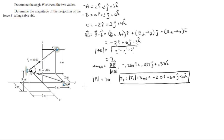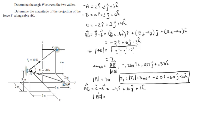Now we're going to repeat all the steps but for vector AC, which is equal to C minus A. That comes out to be negative 4i plus 6j plus 1k. The magnitude of this vector, found the same way, is equal to 7.28.